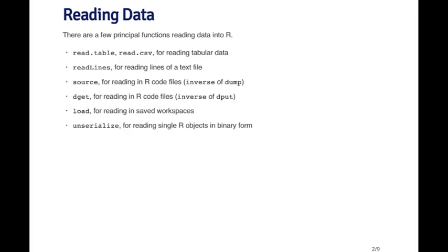The dget function is also for reading R code files, but it's for R objects that have been deparsed into text files. We'll talk a little bit more about this later. The load and unserialized functions are for reading binary objects into R.